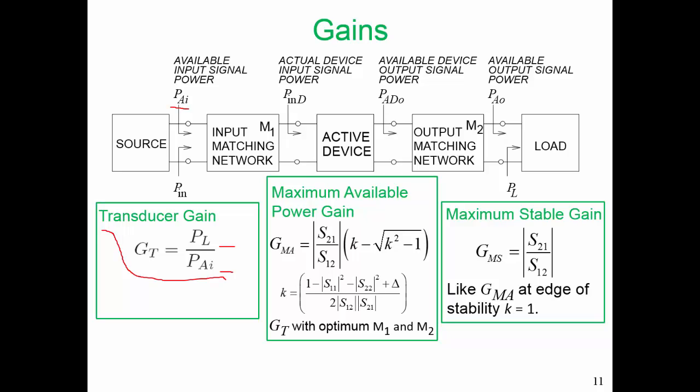The power available from our source is the available input signal power, PAI, which may not be the same as the input power actually delivered to the input matching network and the amplifier, because power could be reflected from our input matching network. Another measure of power is the power actually delivered to our active device, and that may not be the same as PIN because we could have a lossy input matching network. At the output of our active device is the available device output signal power, and if our output matching network was ideal and we had optimum matching, all of that power would be delivered to the load.